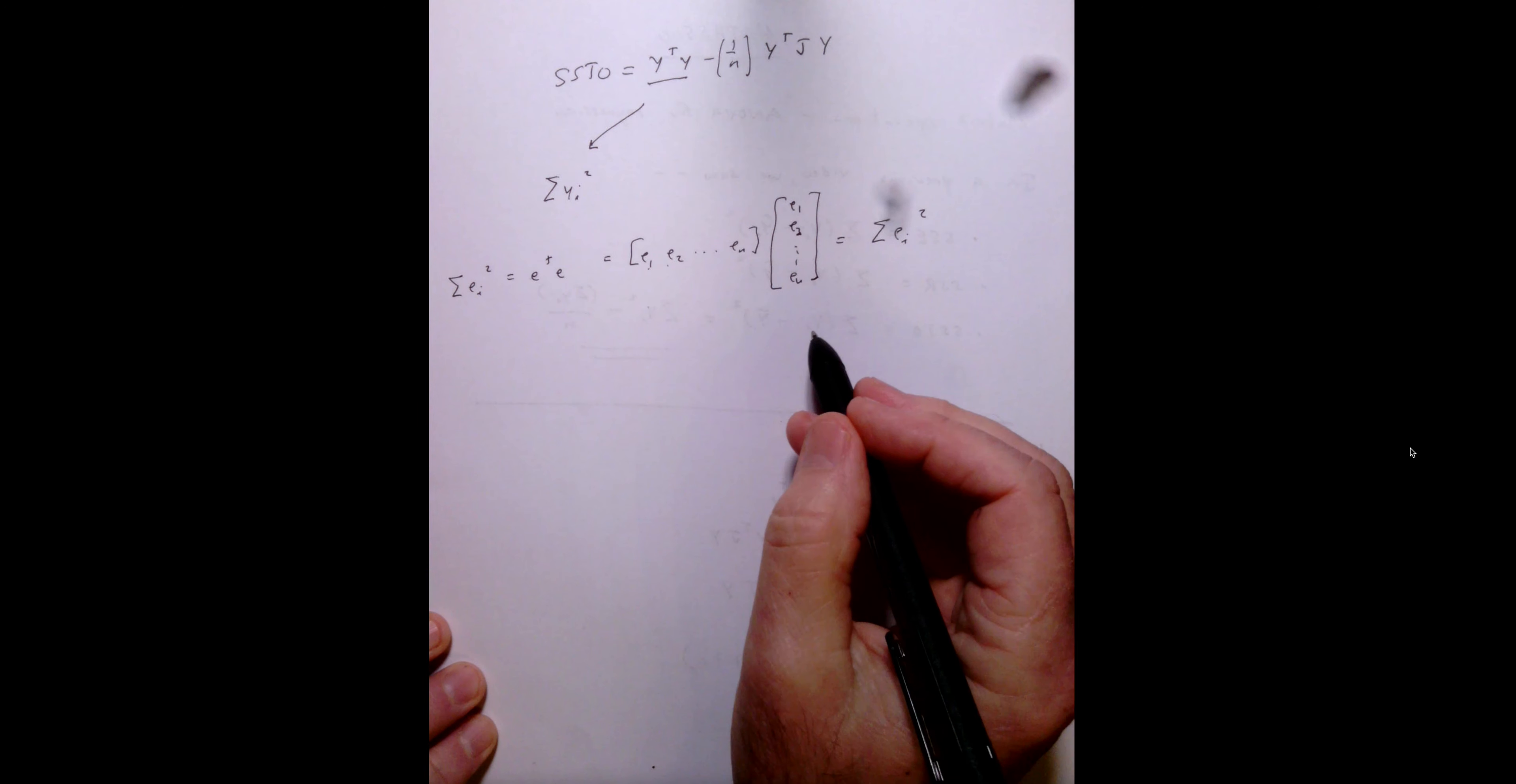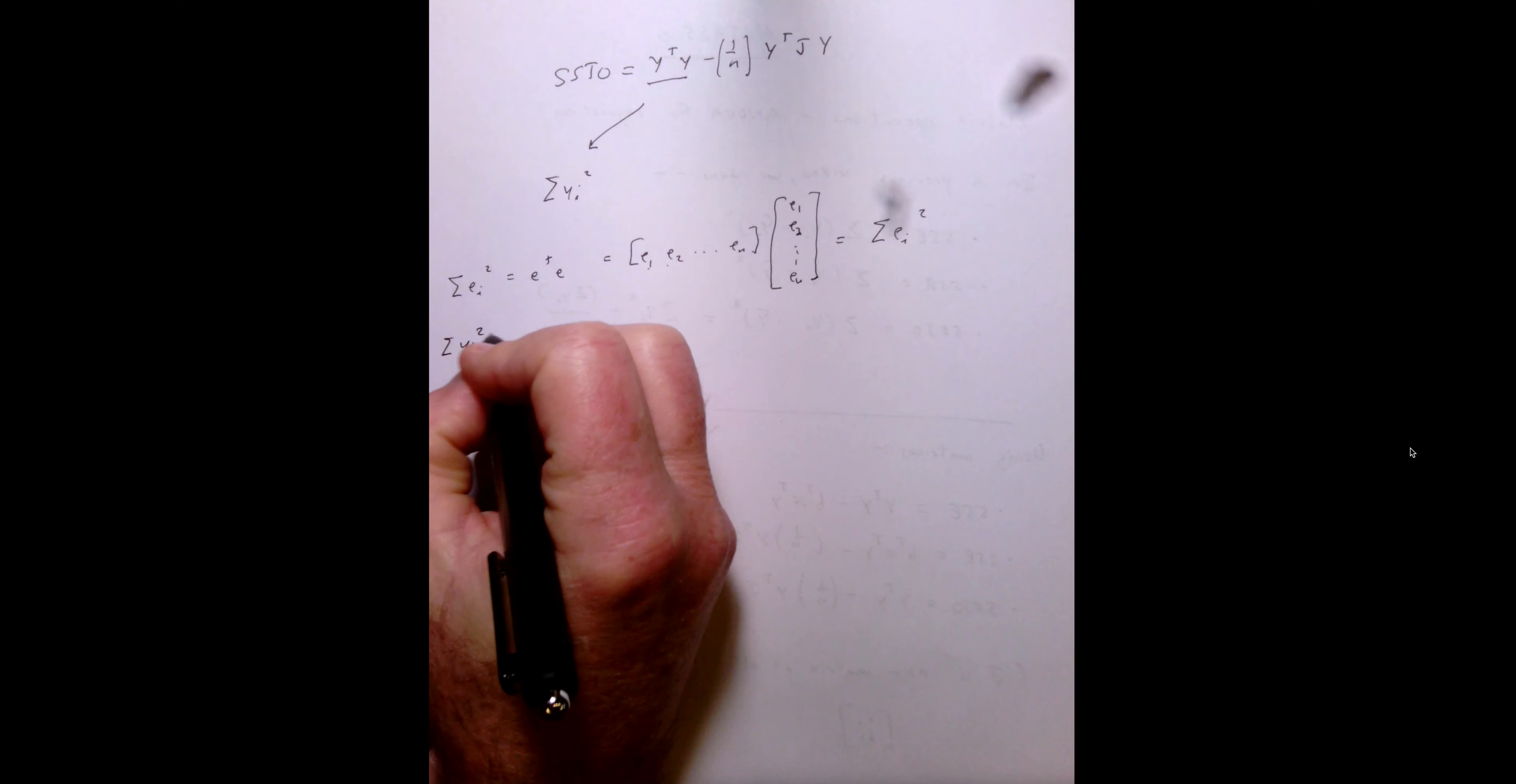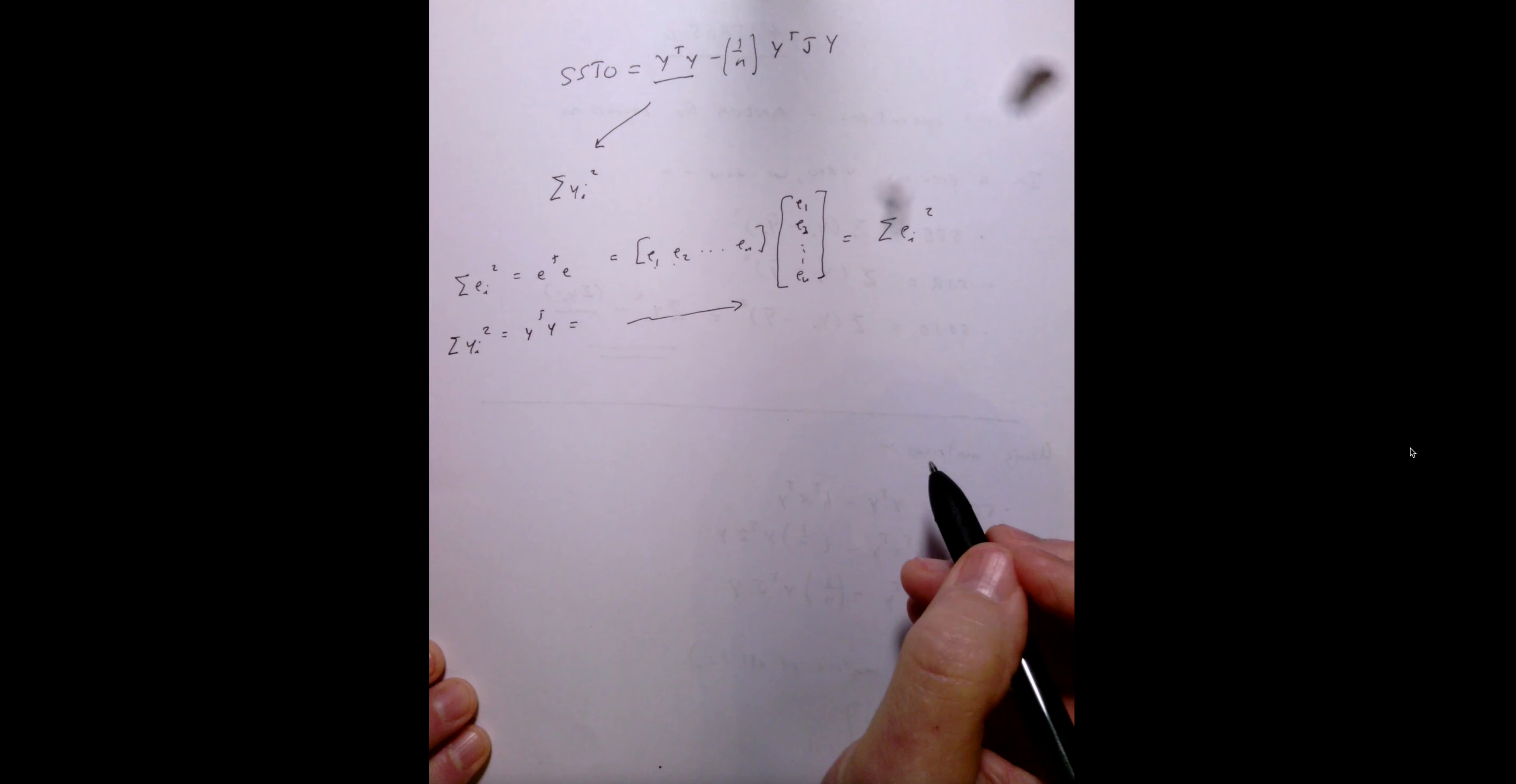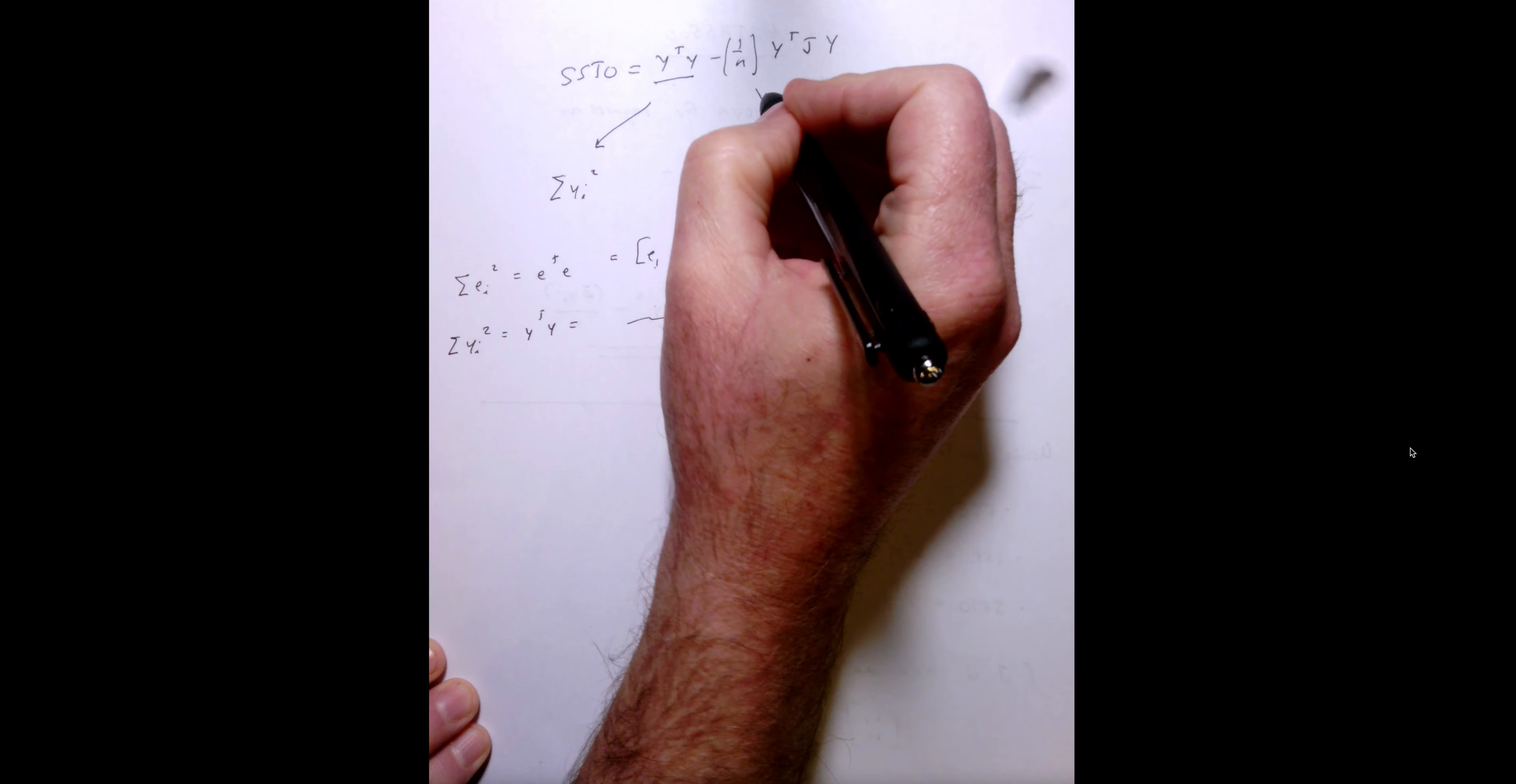So, it should be pretty clear, therefore, that if we want the sum of the y sub i squared, that we would take the y transpose times y for a similar argument. So I think this part is relatively clear.